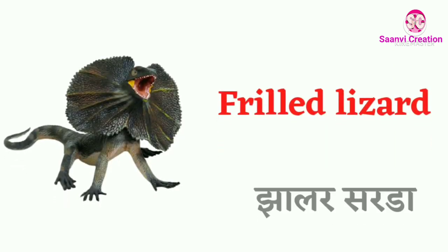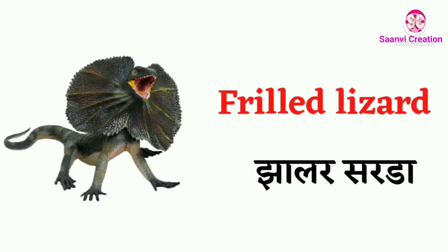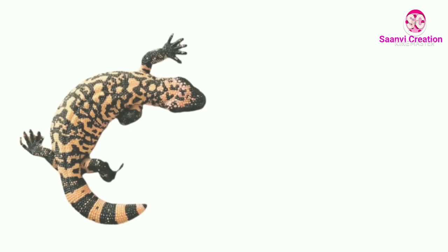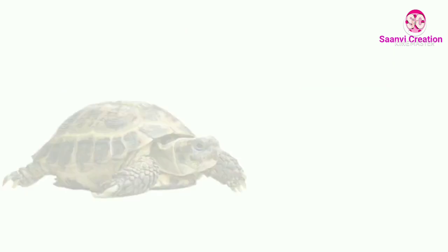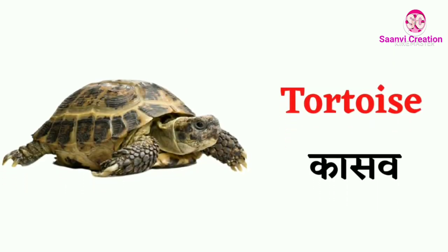Frilled lizard (F-R-I-L-L-E-D L-I-Z-A-R-D) — frilled lizard means 'Zaharal Sarda'. Gila monster (G-I-L-A M-O-N-S-T-E-R) — Gila monster means 'Gila Monster'. Tortoise (T-O-R-T-O-I-S-E) — tortoise means 'Kasav'.